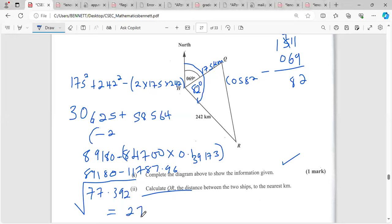Let me double check. It works out to 278. That's the length of QR to the nearest kilometer.